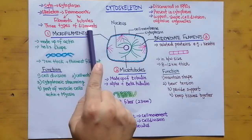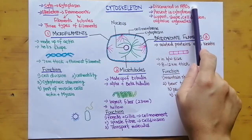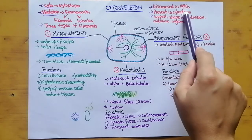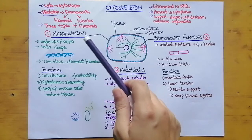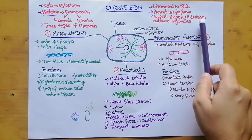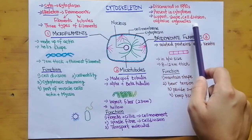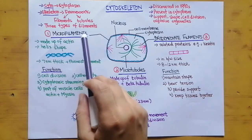The cytoskeleton is made up of three types of filaments, which we will discuss in this lesson. It was first discovered in the 1990s and is present in the cytoplasm. The functions of the cytoskeleton include supporting the cell, giving it shape, aiding in cell division, and organizing the organelles present inside the cell.